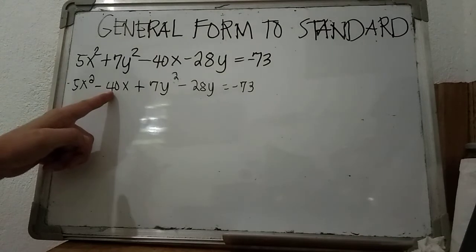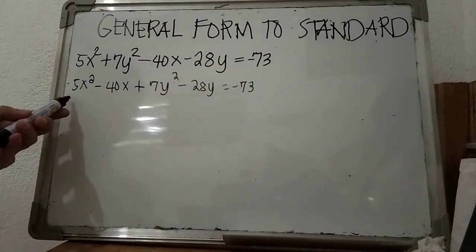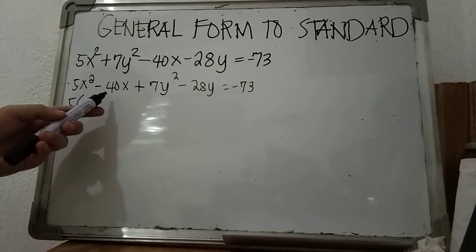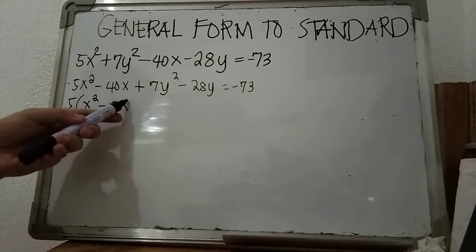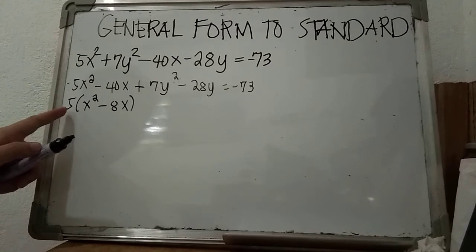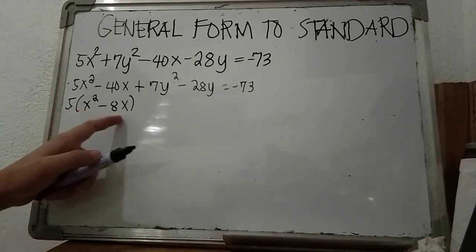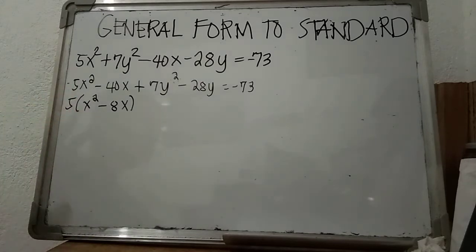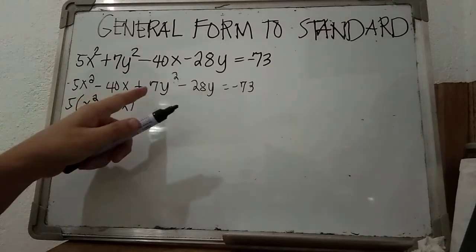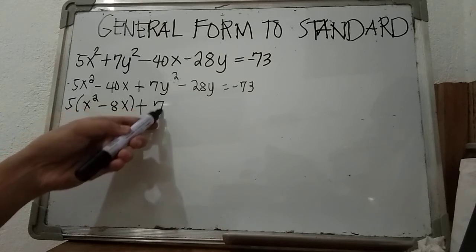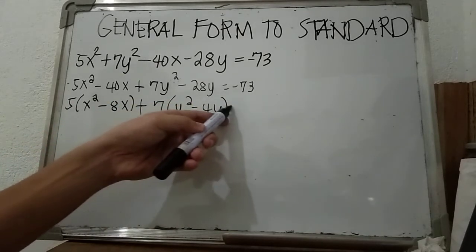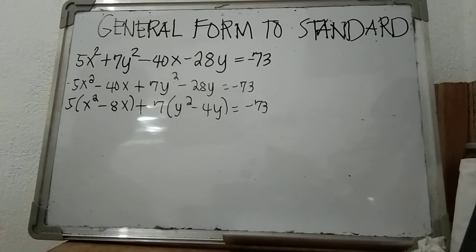Next, we factor out the common factor. For 5 and 40, the common factor is 5, so we factor that out: 5 times (x squared minus 8x). For 7 and 28, the common factor is 7, so we factor that out: 7 times (y squared minus 4y), equal to negative 73.